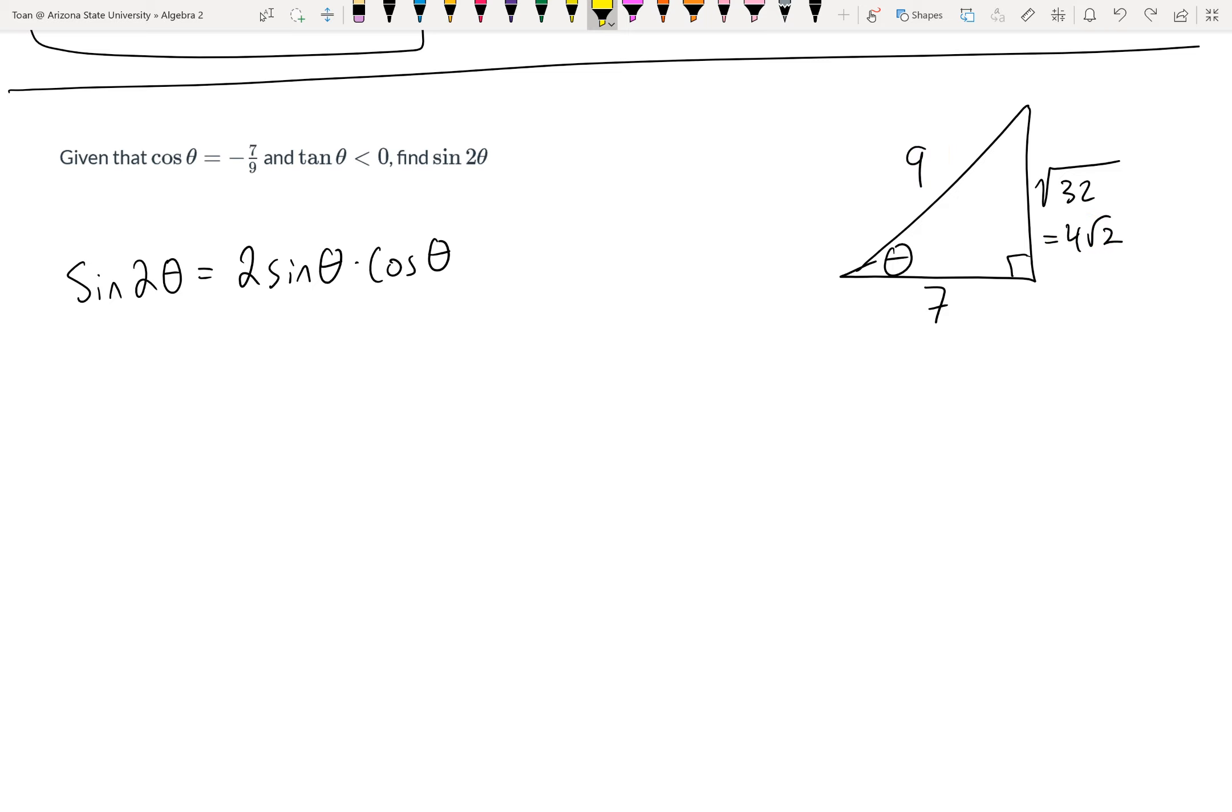But what about the negatives we just ignored? We have to know what quadrant we're in. Anytime we're doing trig, we always have to be conscious of what quadrant we're in. This information says cosine is negative and tangent is negative - that's what less than zero means. Ask yourself: of the four quadrants, which quadrant are cosine and tangent negative in?